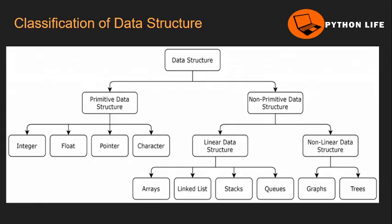The next topic is classification of data structures. Data structure is divided into two types: first, primitive data structure, and next, non-primitive data structure. Primitive types include integer, float, pointer, and character. Non-primitive data structures include linear data structures — arrays, linked lists, stacks, queues — and non-linear data structures such as graphs and trees, which we will see in upcoming classes.